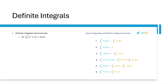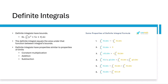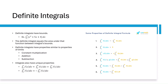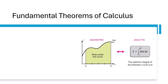There are two types of integrals: definite and indefinite. Definite integrals have bounds, and the definite integral equals the area under the function between those two bounds. Definite integrals have properties like the properties of limits — constant multiplication, addition, and subtraction can be pulled through the integral. Integrals have the unique property that integrating from A to C with B between A and C equals the integral from A to B plus the integral from B to C. Also, if you switch the order of the bounds, you negate the integral.